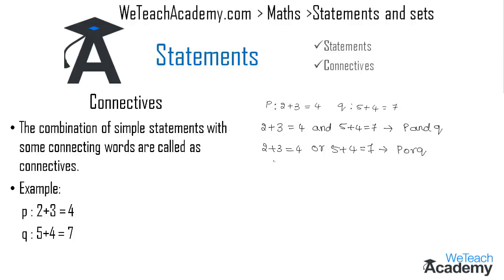We can also write: 'If 2 plus 3 is equal to 4, then 5 plus 4 is equal to 7', and symbolically it can be represented as p THEN q.